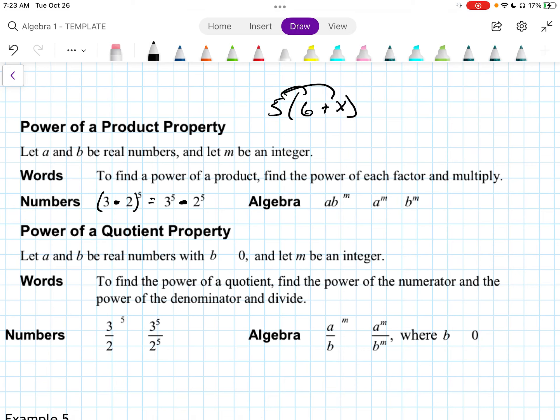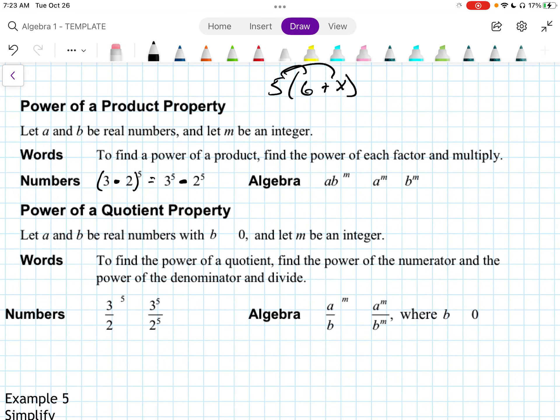This is kind of like distributing. It's the exponent version of distributing. In algebra, if we have AB to the M, that would be equal to A to the M times B to the M.